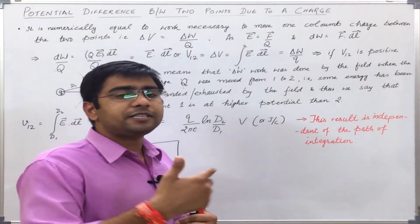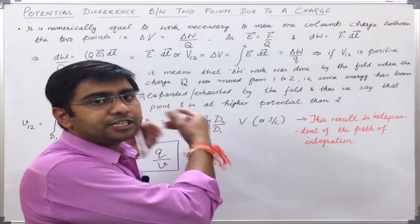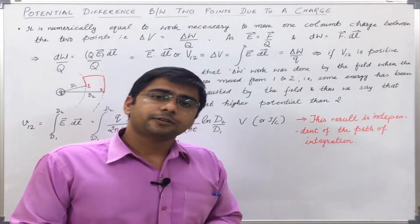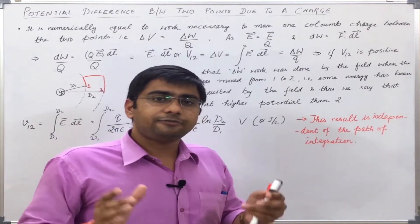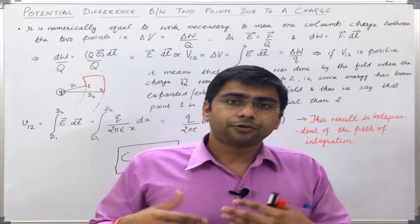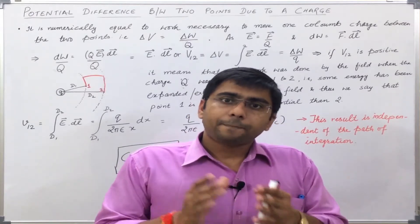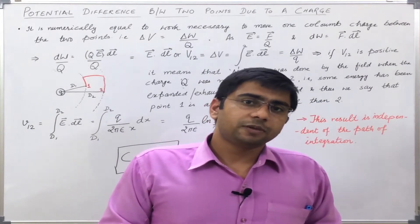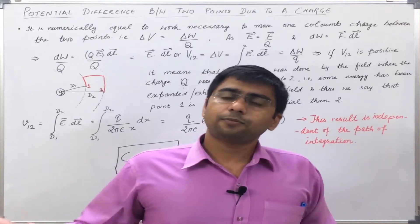What is potential difference between two points due to some field of a charge? It is nothing but the work done per unit charge when we move the charge from point 1 to the other point. If I move a charge between two points, either the field will work or I will have to do the work so that the charge can move. The work done per unit charge gives us a value which is numerically equal to the potential difference between the two points due to a field created by some other point charge.